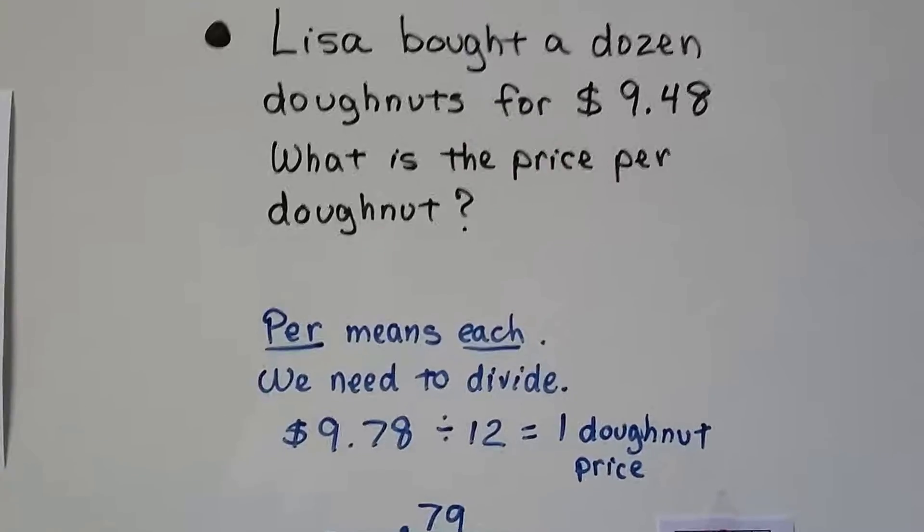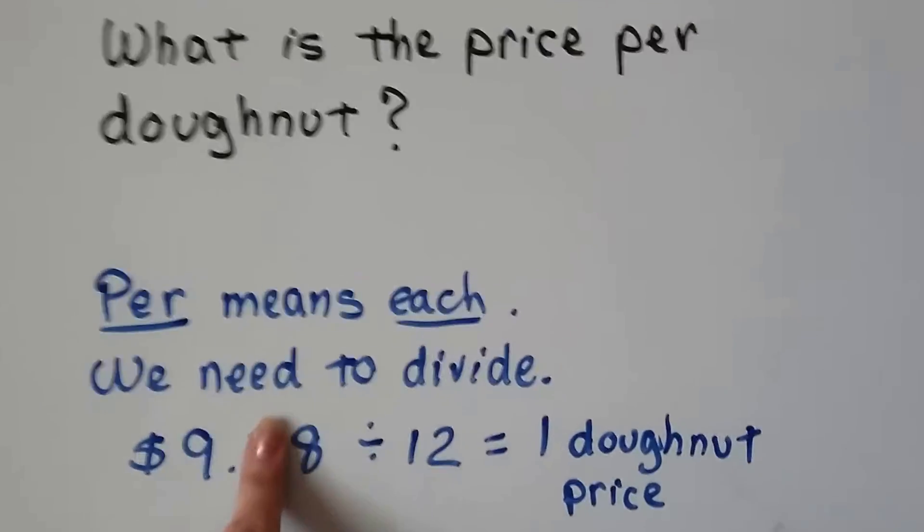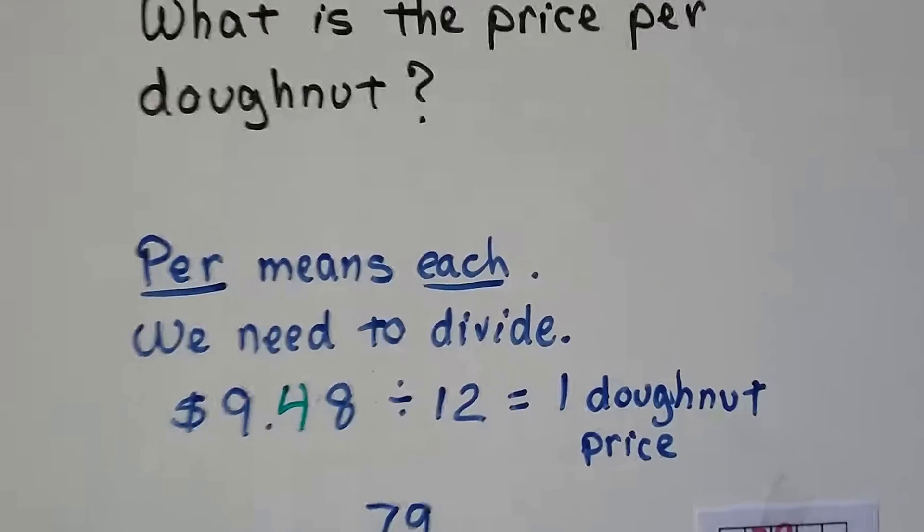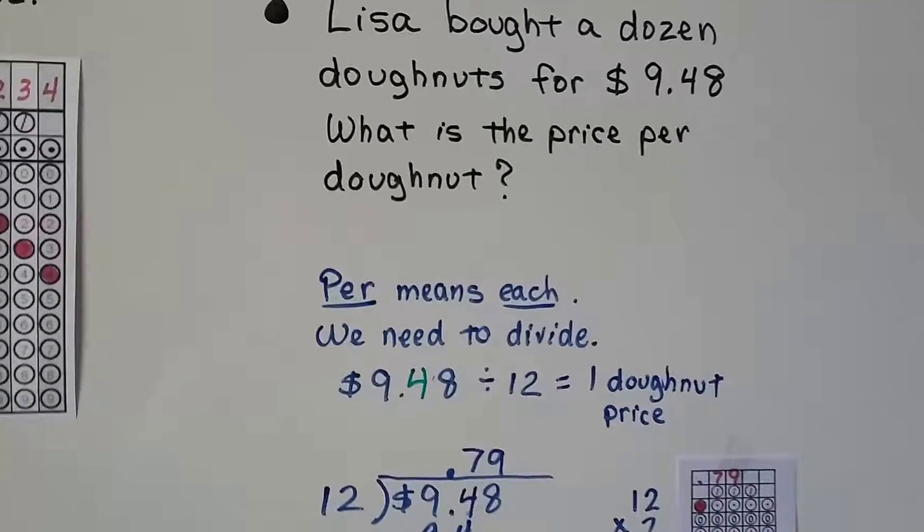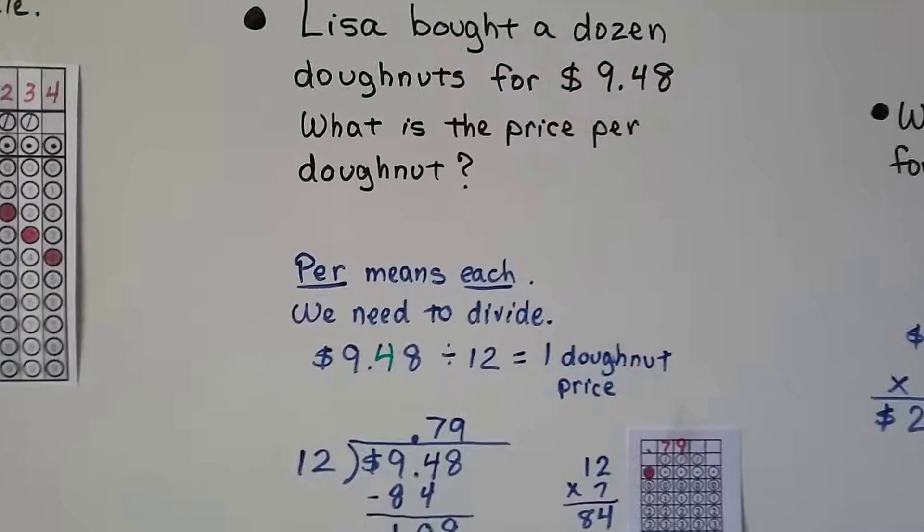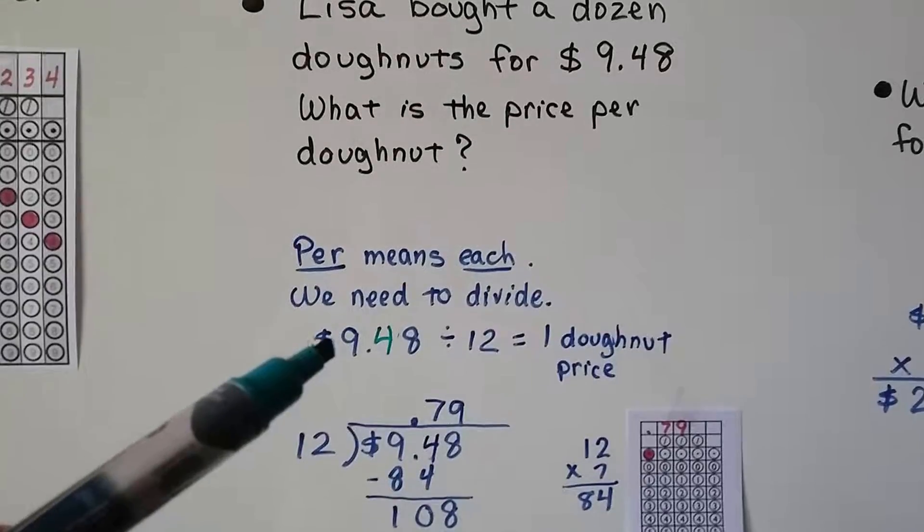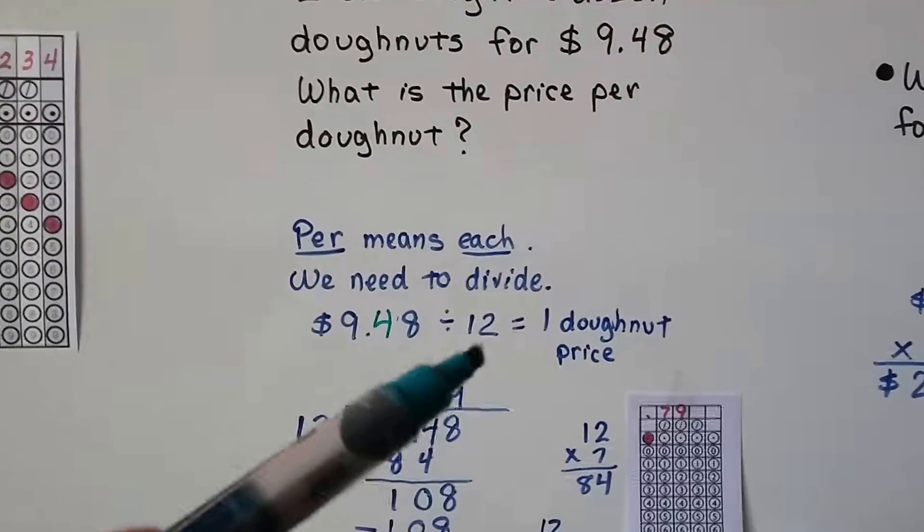We divide the $9.48 by 12. That'll give us the one donut price. If you have your calculator, you can just do this really quickly. 9.48 divided by 12.